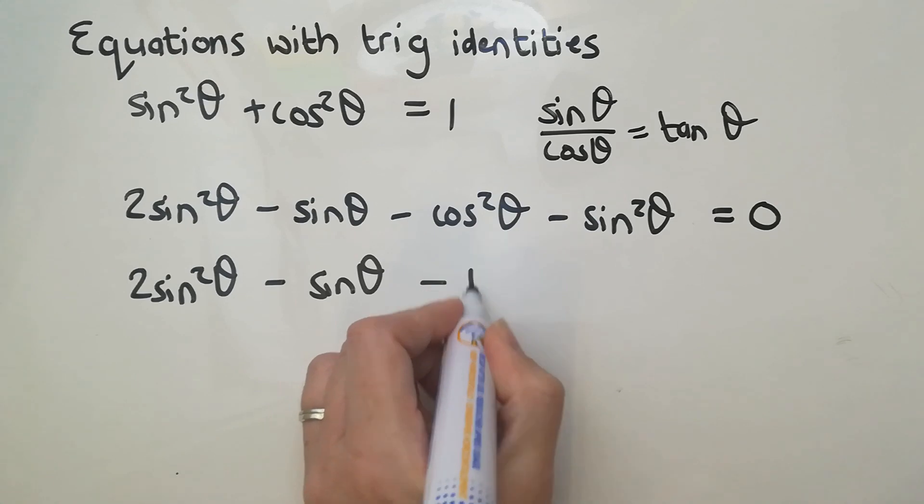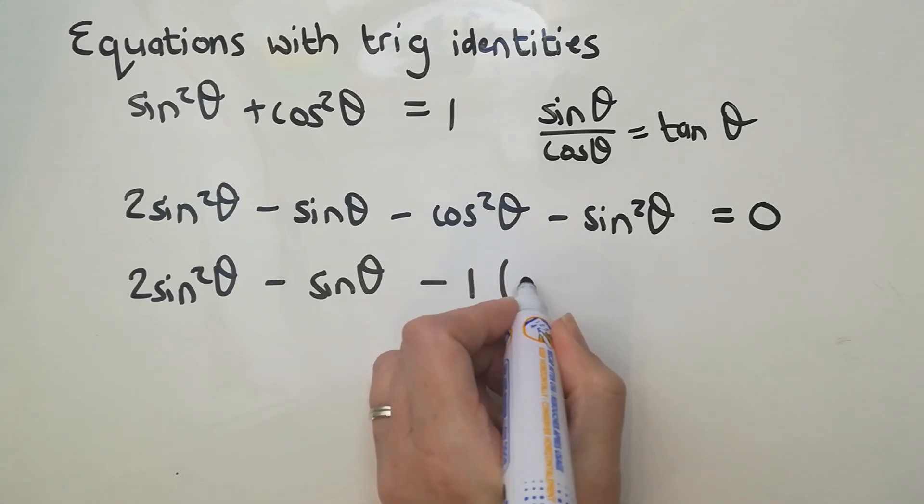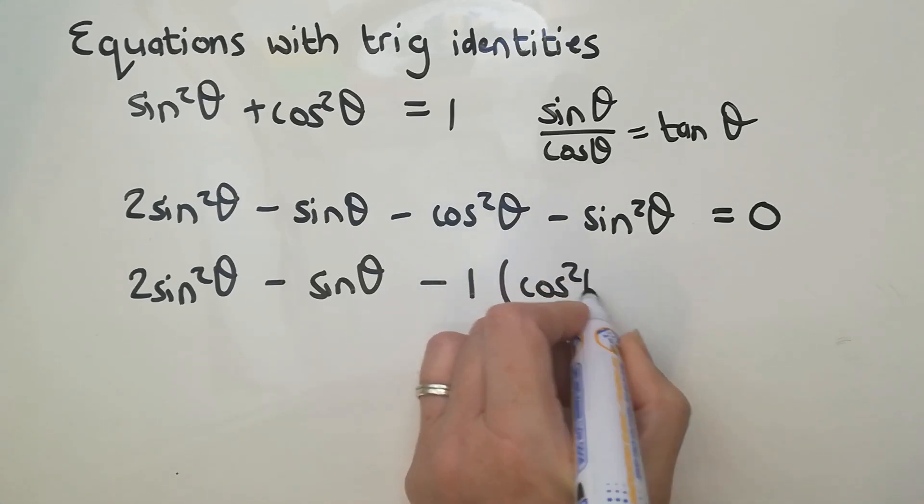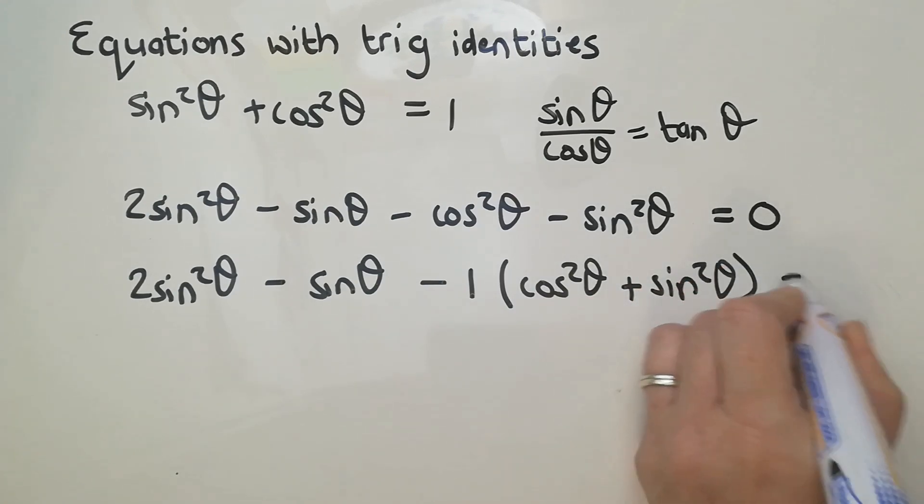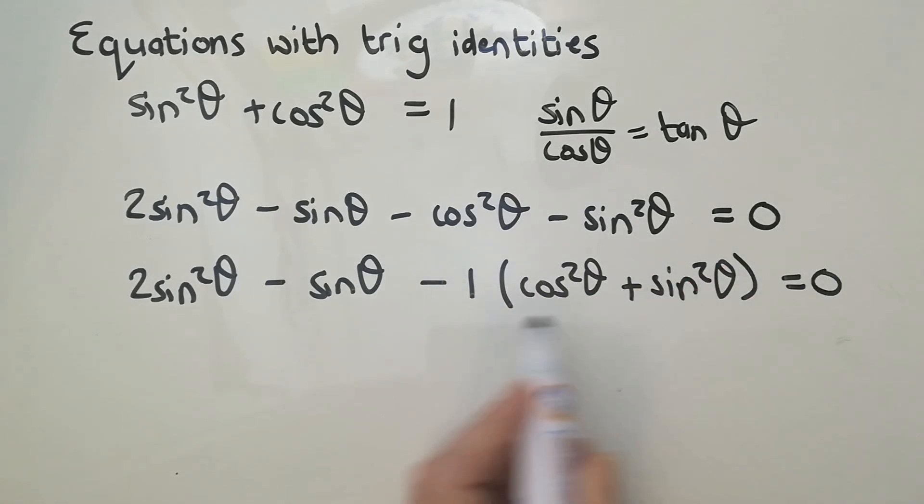Let me take out a negative one, and then I'm left with cos²θ + sin²θ. Obviously that is 1. If you times anything by 1, you haven't done anything.